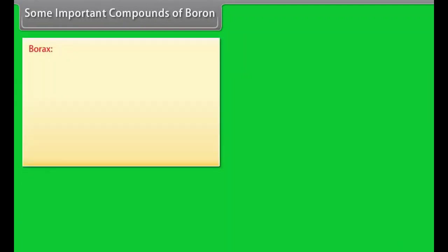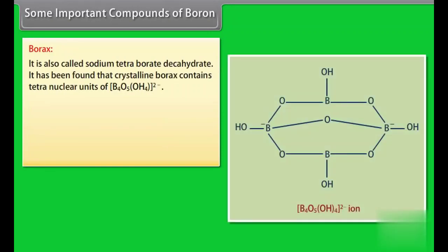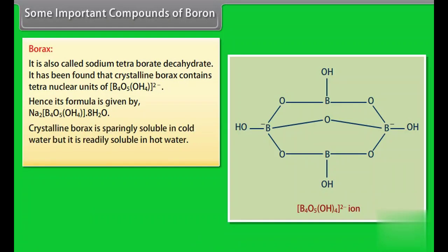Some important compounds of boron. Borax. It is also called sodium tetraborate decahydrate. It has been found that crystalline borax contains tetranuclear units of B4O5(OH)4 2-. Hence its formula is given by Na2[B4O5(OH)4]·8H2O. Crystalline borax is sparingly soluble in cold water but it is readily soluble in hot water.